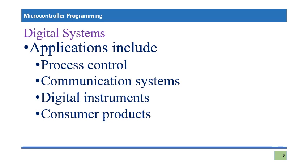Consumer products are products consumed by ordinary people who may not know they come from digital system applications. For example, refrigerators in our homes, digital televisions which are essentially TV on demand, gaming laptops, and gaming computers are all things people consume daily — and they are all applications of digital systems.